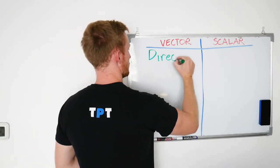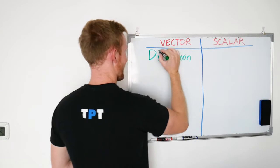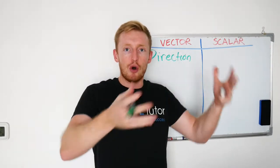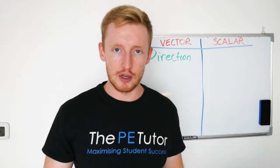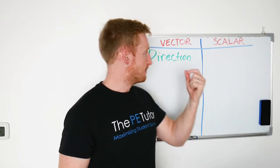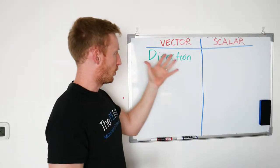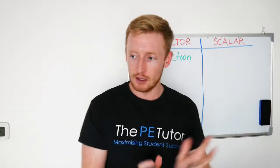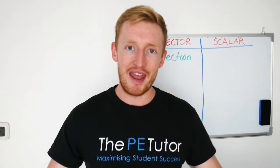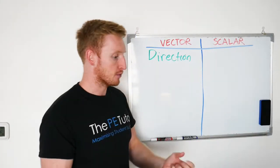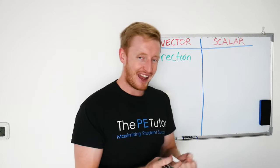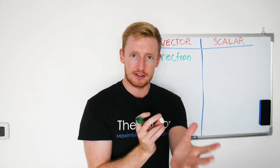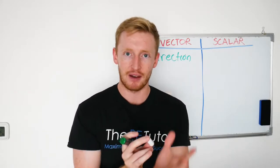Vectors must have a direction attached to the measurement of whatever form of motion is being described or analysed. Direction meaning that we are measuring something in a certain angle or bearing — we care about point A and point B and the line of motion that is taking place.